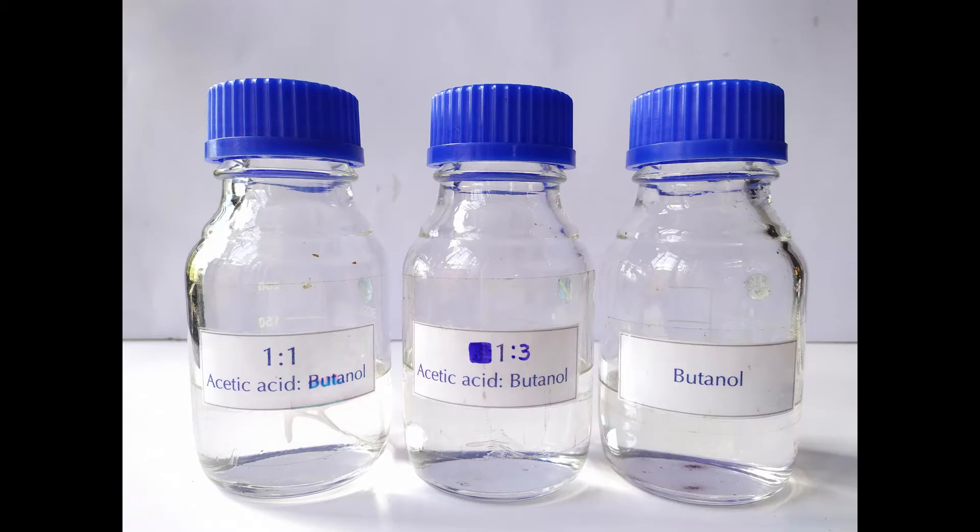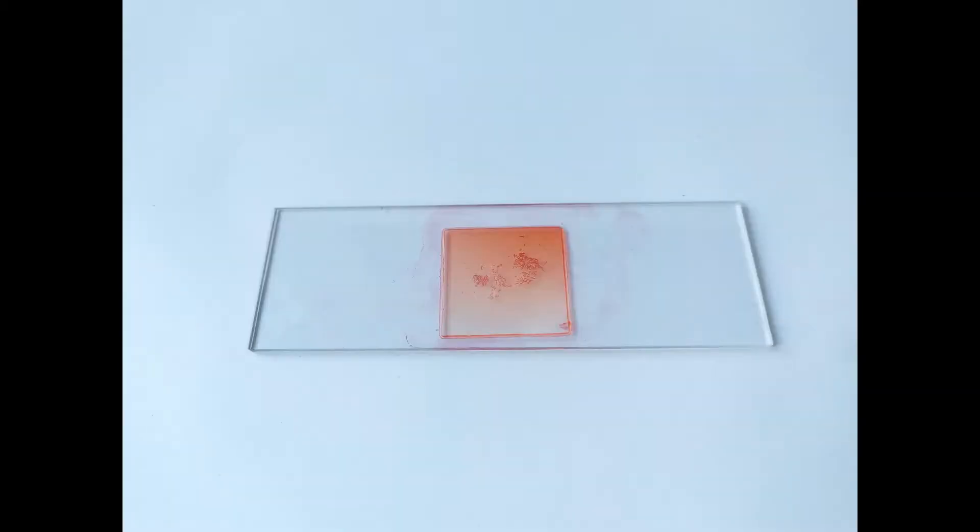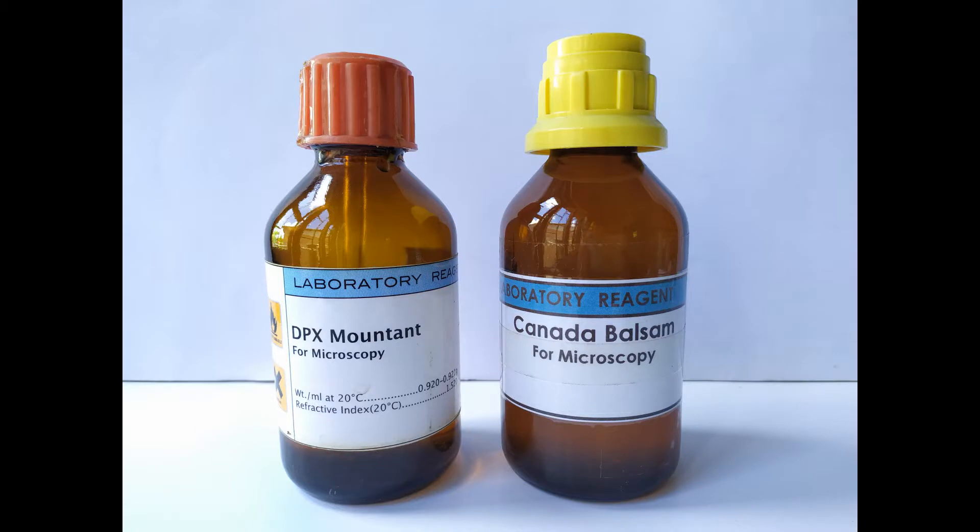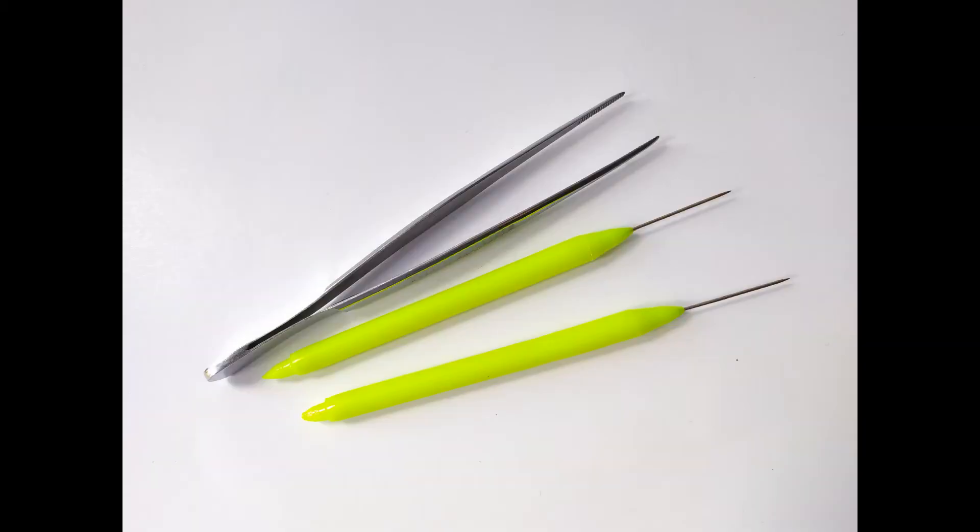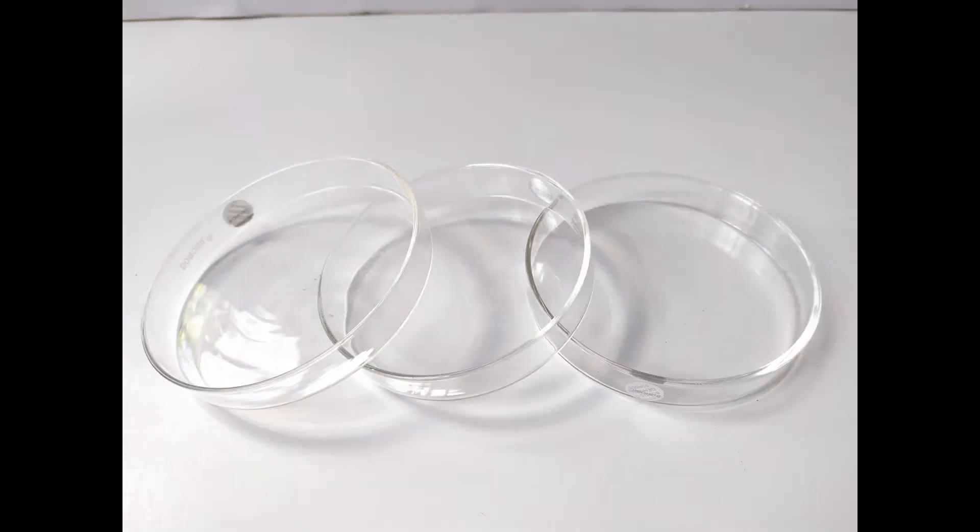You'll need butanol and acetic acid in equal parts, 3 to 1 butanol and acetic acid, pure butanol, temporary cytological slide preparations made previously, mounting mediums such as DPX or Canada Balsam, forceps or tweezers and pins, petri dishes, glass slides and cover slips.